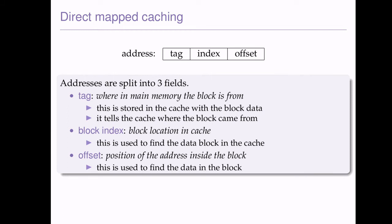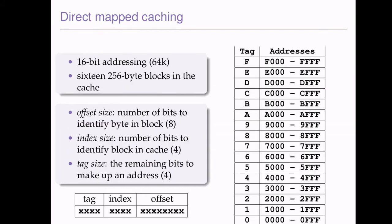The block index is how we find the block in the cache. Once it's been moved to the cache, we need a way of identifying it, and we need a sufficient number of bits to identify it so we can get to it when we need to. The offset tells us where the data is on the block — it's similar to the block index, but the offset tells us where to go within the block.